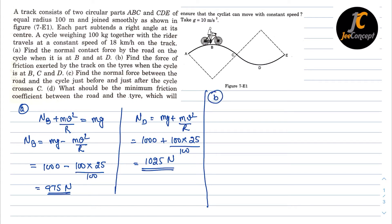Now for part B, we have to calculate the force of friction exerted by the track on the tire when the cycle is at B, C and D. So at point B and D, there will be no skidding of the cycle. So that means if the skidding is not there, then the frictional force is 0 at point B and D.